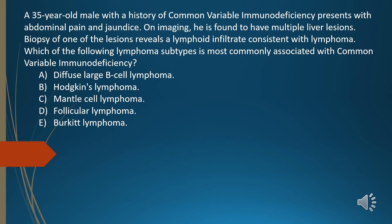A 35-year-old male with a history of common variable immunodeficiency presents with abdominal pain and jaundice. On imaging, he is found to have multiple liver lesions. Biopsy of one of the lesions reveals a lymphoid infiltrate consistent with lymphoma. Which of the following lymphoma subtypes is most commonly associated with common variable immunodeficiency?